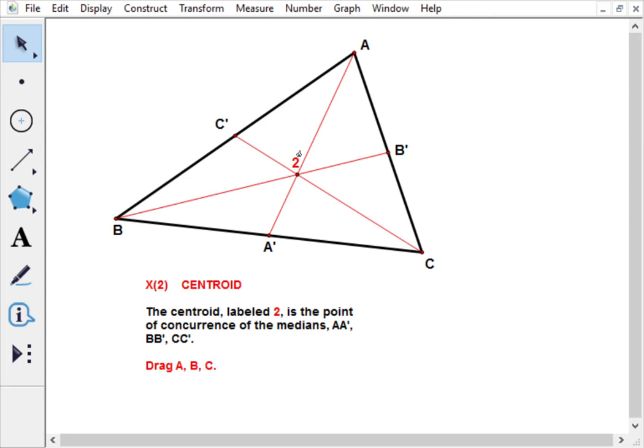The centroid is the intersection or the meet of the three medians of the triangle, which are the lines joining vertices to the midpoints of the opposite sides.